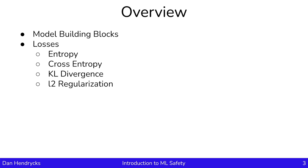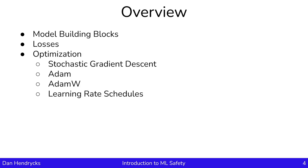Model building blocks have their parameters adjusted through losses. Some of these losses are information theoretic losses, such as cross entropy. There are other losses, such as L2 regularization, which prevent the parameters from blowing up in size. Model building block parameters are adjusted to achieve a lower loss. These adjustments are made by optimizers, so we'll discuss some of the main optimizers, including Adam. Then we'll discuss learning rate schedulers, which help stabilize optimization.